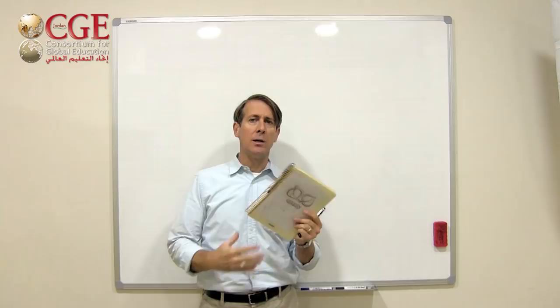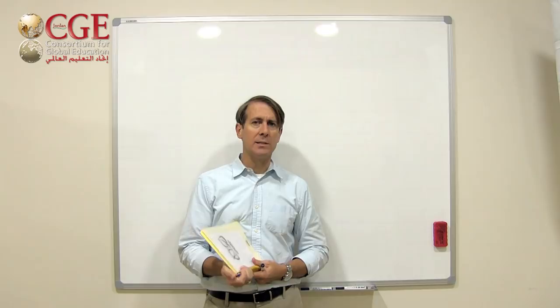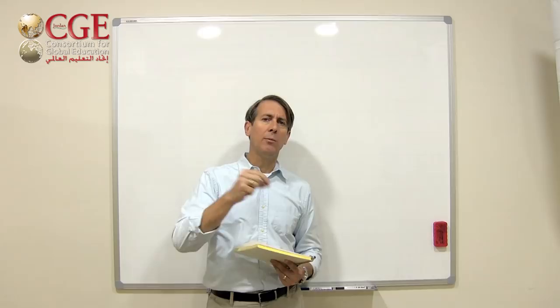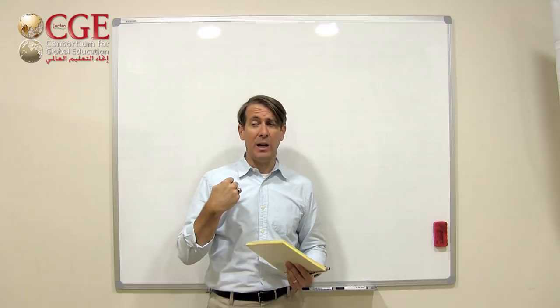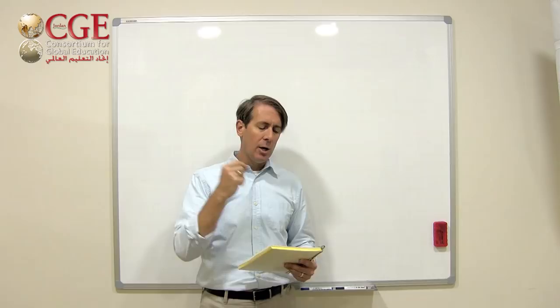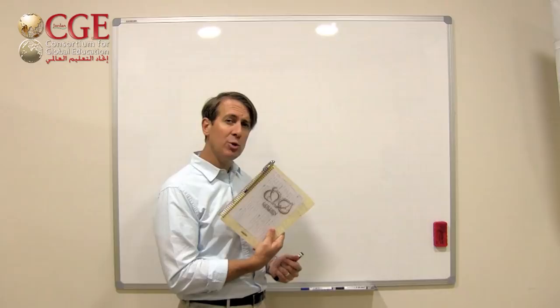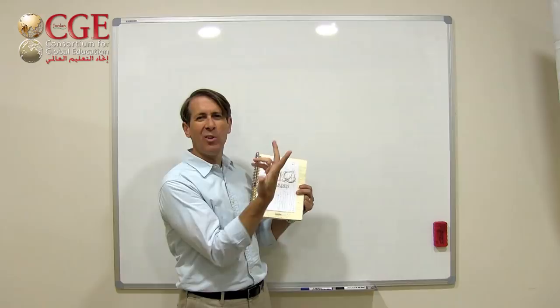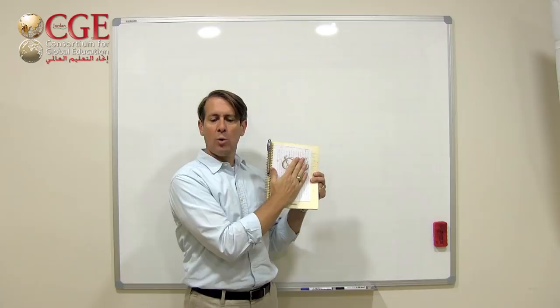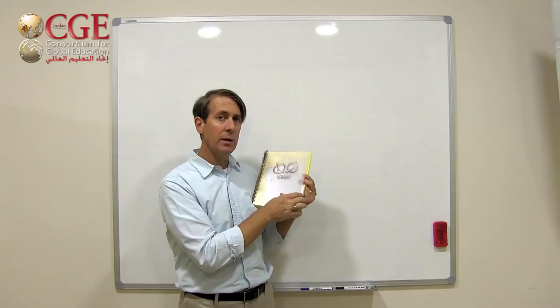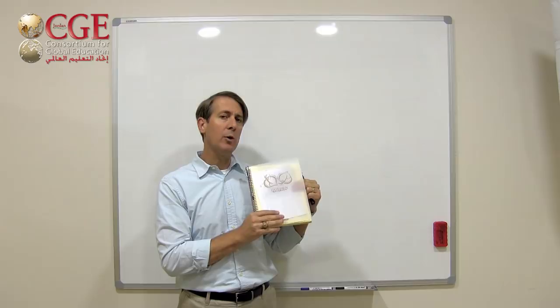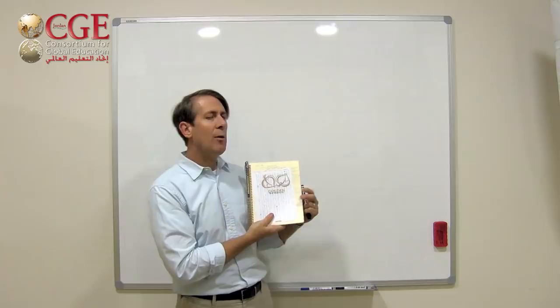The idea with the notebook is that quickly you want to be able to open it up and write down a word you hear. Or if there's something you want to say but can't, write it down so you can ask later what that is in Arabic. Your notebook is basically going to be two sides: the first side, which I call the English side — we write left to right — will be your collection side, or what I call the rough draft side, for collecting words.